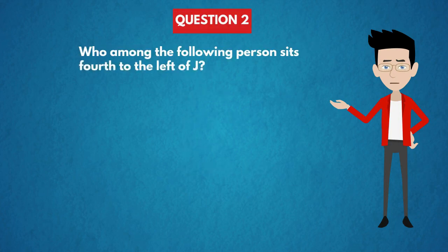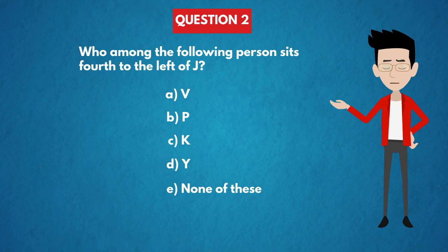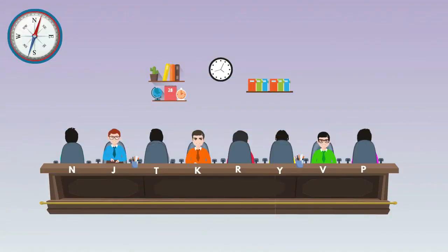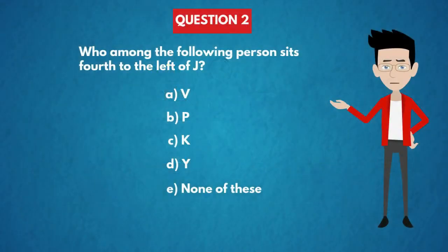Question 2: Who among the following person sits fourth to the left of J? Options: A) V, B) P, C) K, D) Y, E) None of these. In the diagram, the person sitting fourth to the left of J is Y. The answer is Option D: Y.